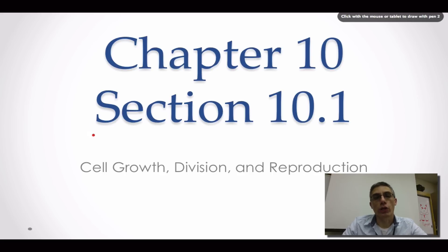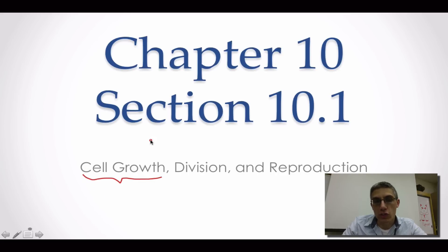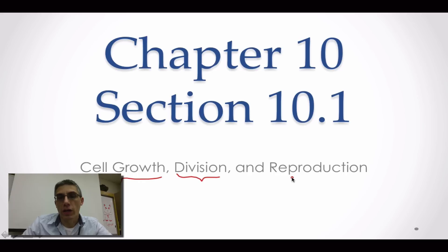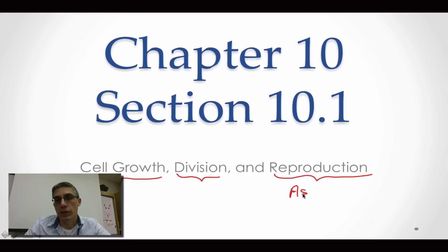In Section 10.1, we're going to look at some of the limits to cell growth. As most of us know, cells are really, really small, and there's a reason for that. We're also going to give you information on cell division and why it occurs, and we're going to look at the two different methods of reproduction: asexual reproduction and sexual reproduction.